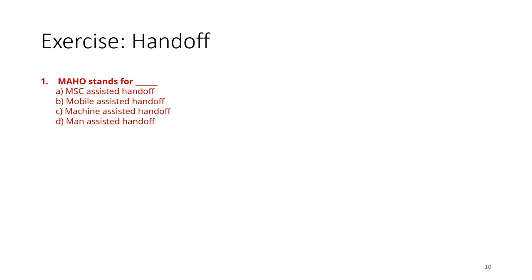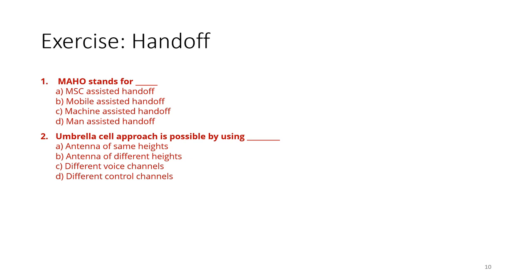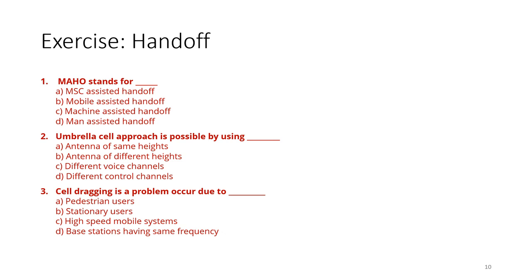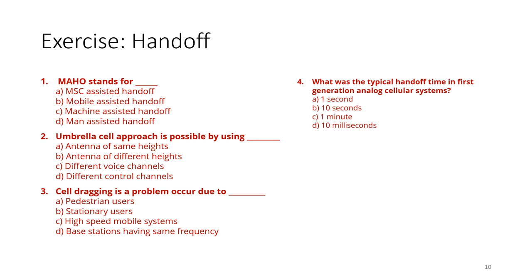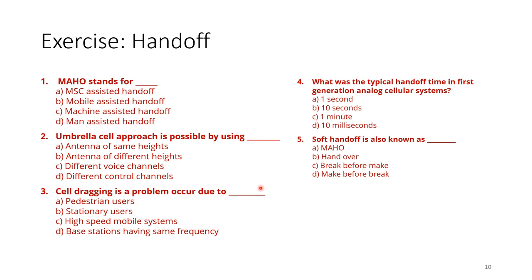Let's conclude with a quiz exercise. Multiple choice questions: What does MAHO stand for? The umbrella cell approach is possible by using what? Cell dragging is a problem that occurs due to what? What was the typical handoff time in the first generation analog cellular systems? And what is soft handoff also known as? You can pause the video, write your choices in the comments, and cross-check with others. Thank you for listening — search for 'Muqaibel wireless communication' to find the course website and slides.